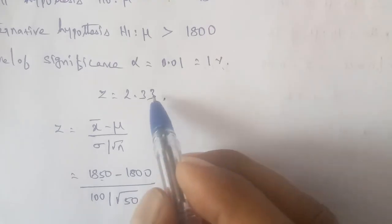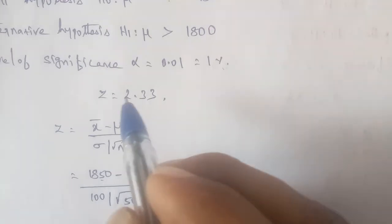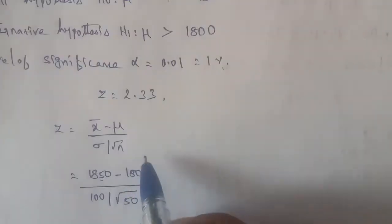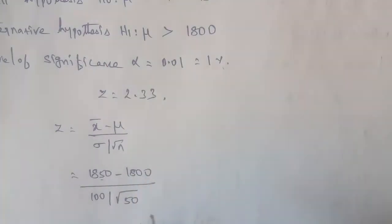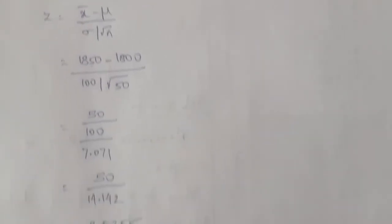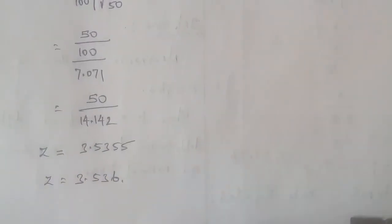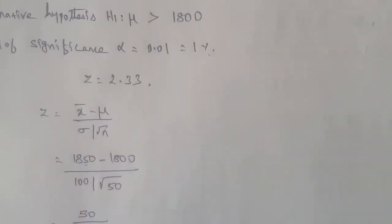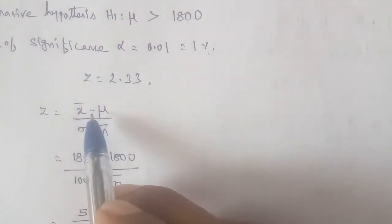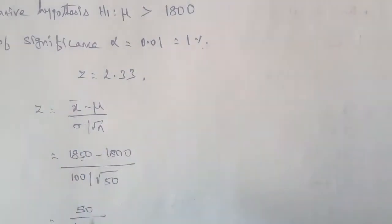The calculated z-value is 3.536. The critical value is 2.33. Since 3.536 is greater than 2.33, it falls in the rejection region. So this is a rejected item — null hypothesis H0 is rejected.